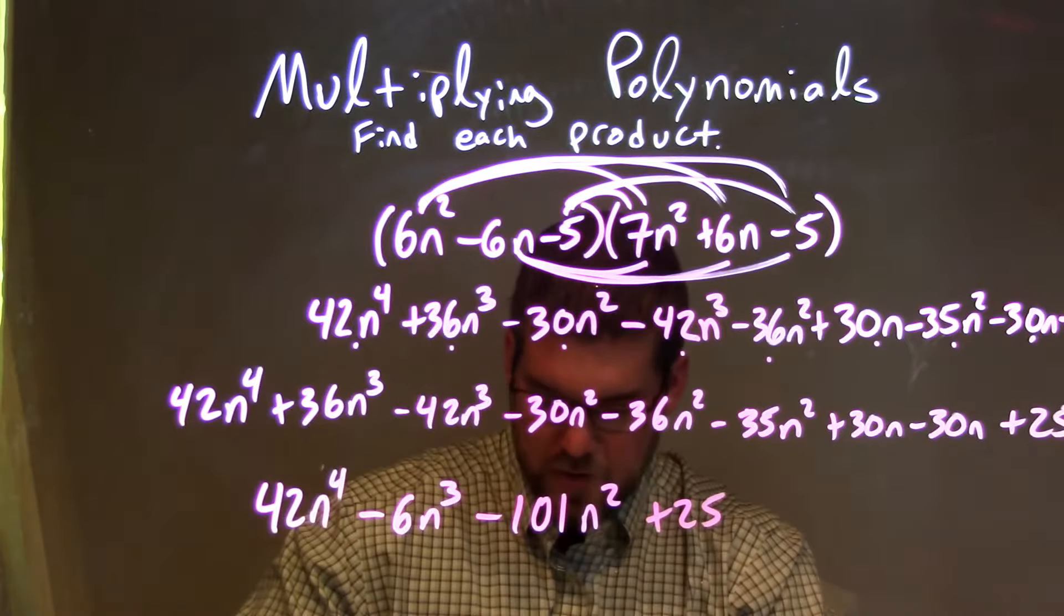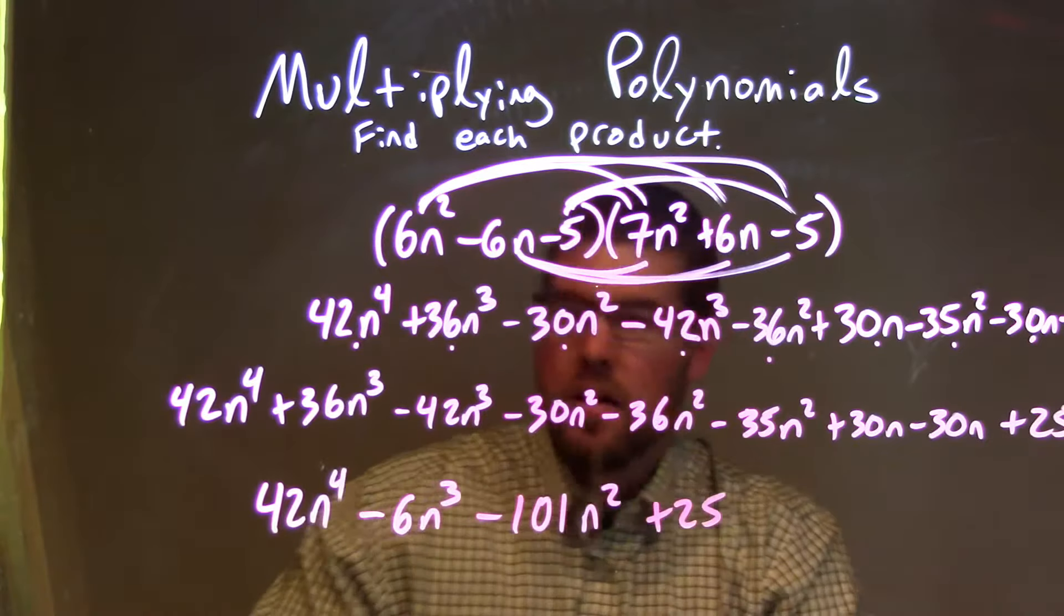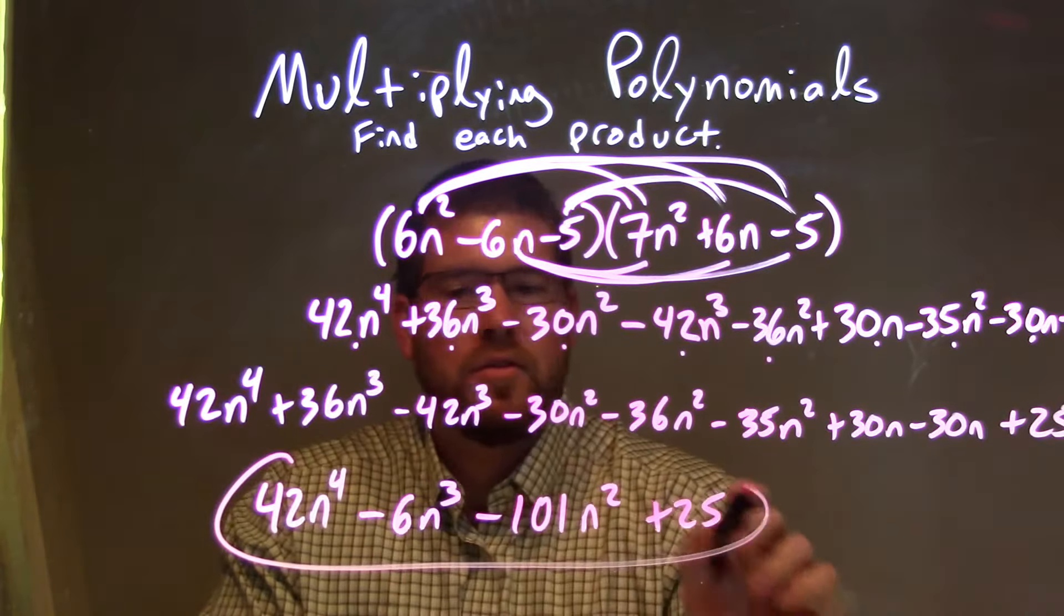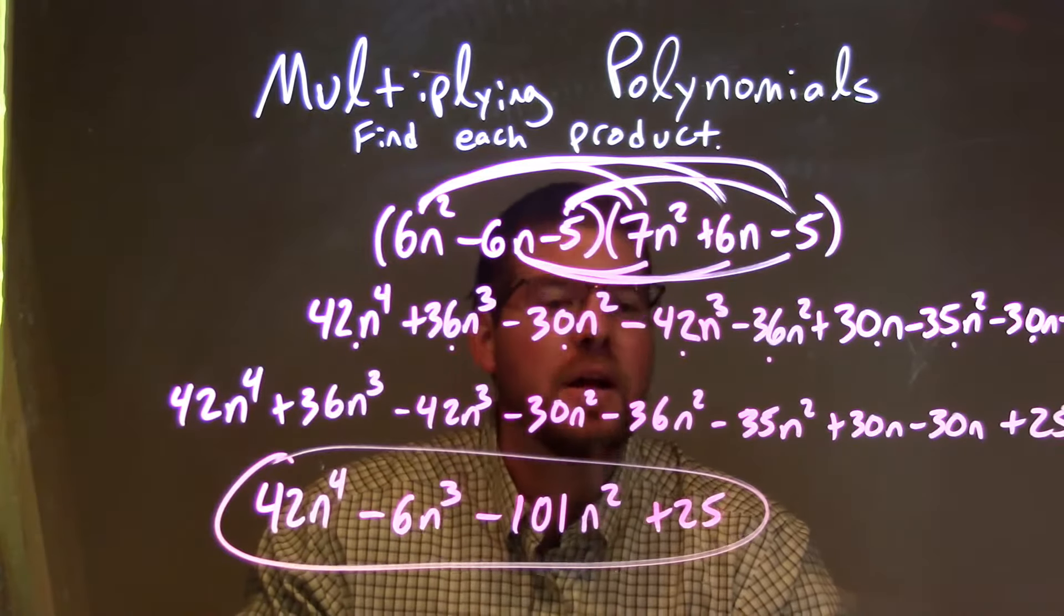So I'm double checking here, make sure I got everything. I got it right. We're looking good. So our final answer is just 42n to the fourth, minus 6n to the third, minus 101n squared, plus 25.